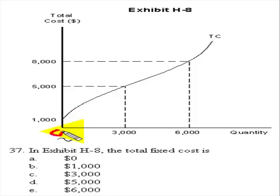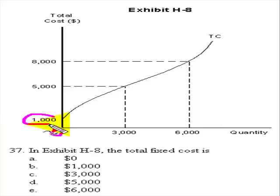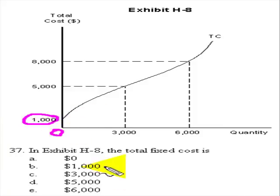And if we look at an output level of zero, what we see is that there is still some cost of $1,000 even at zero. So that tells us that the total fixed cost is actually $1,000.